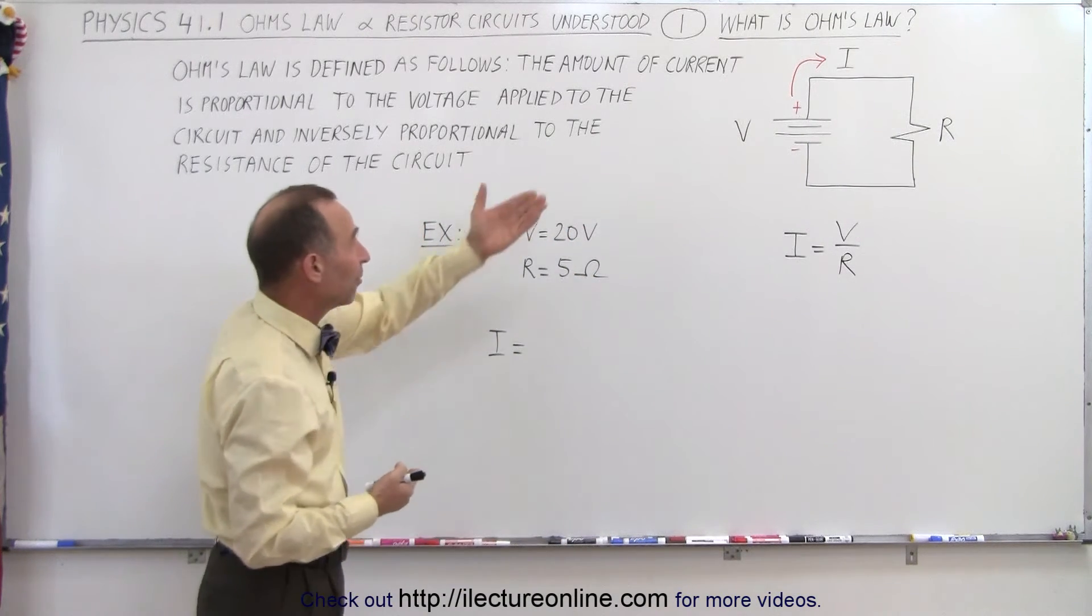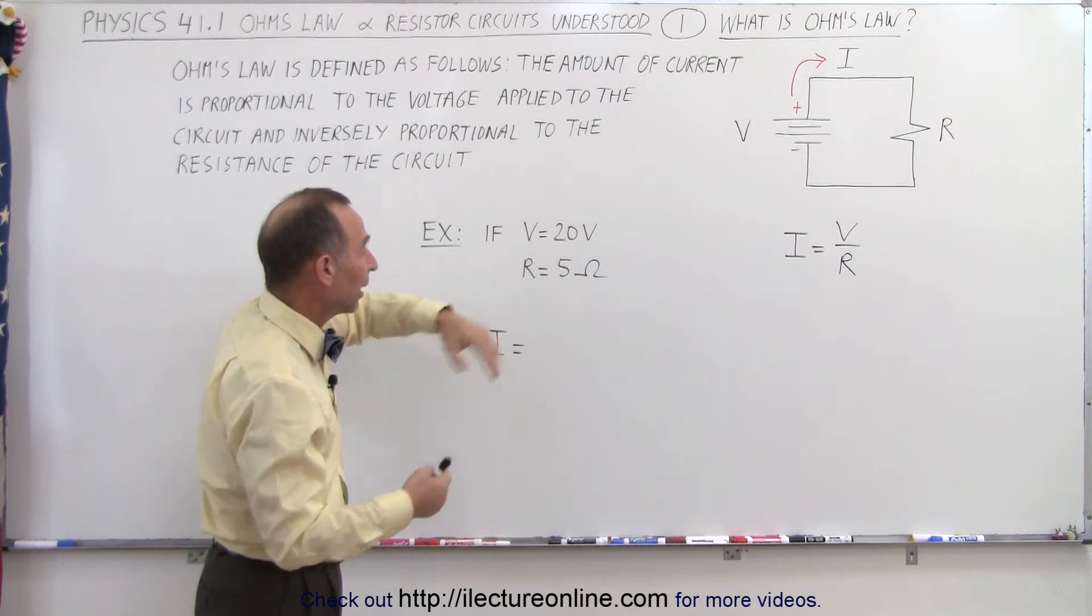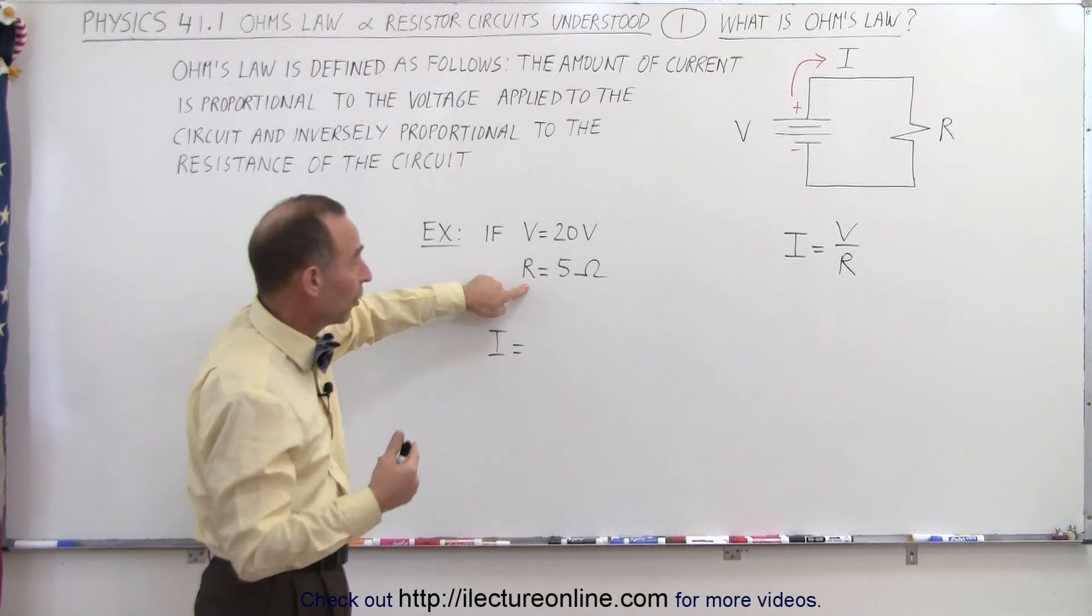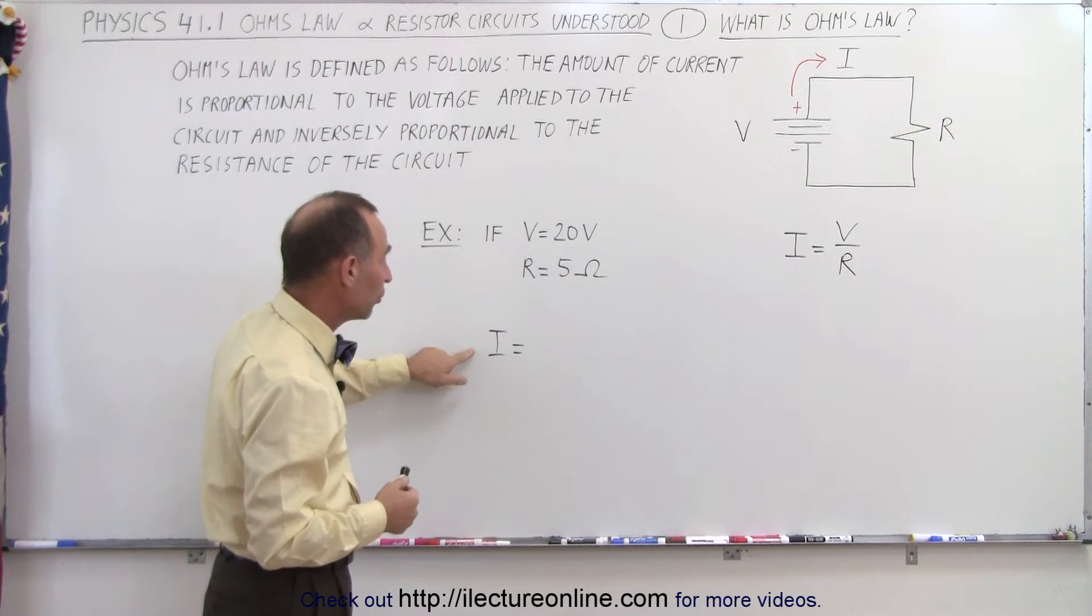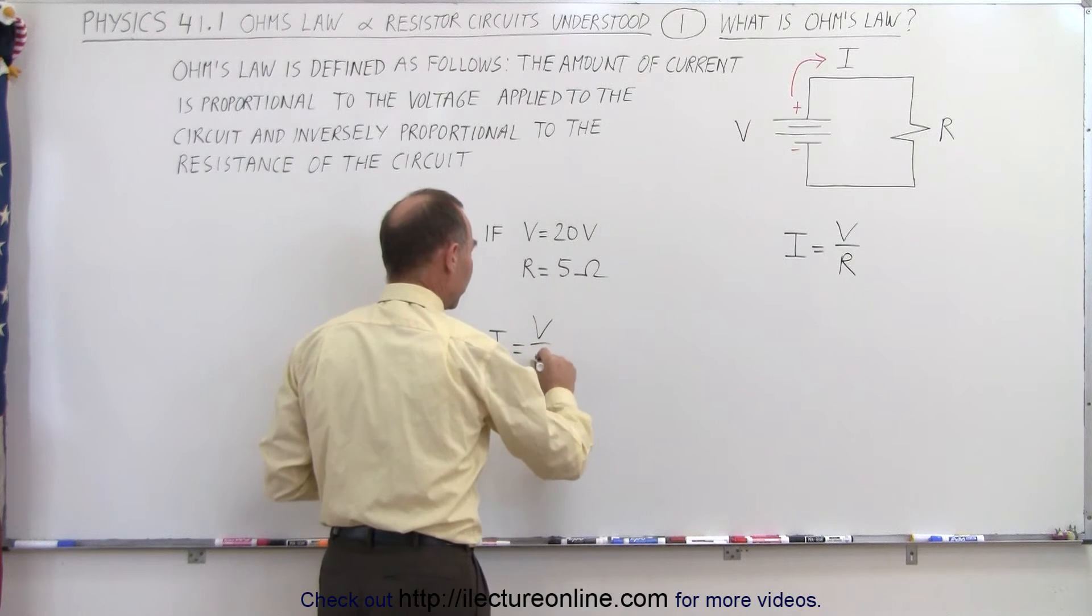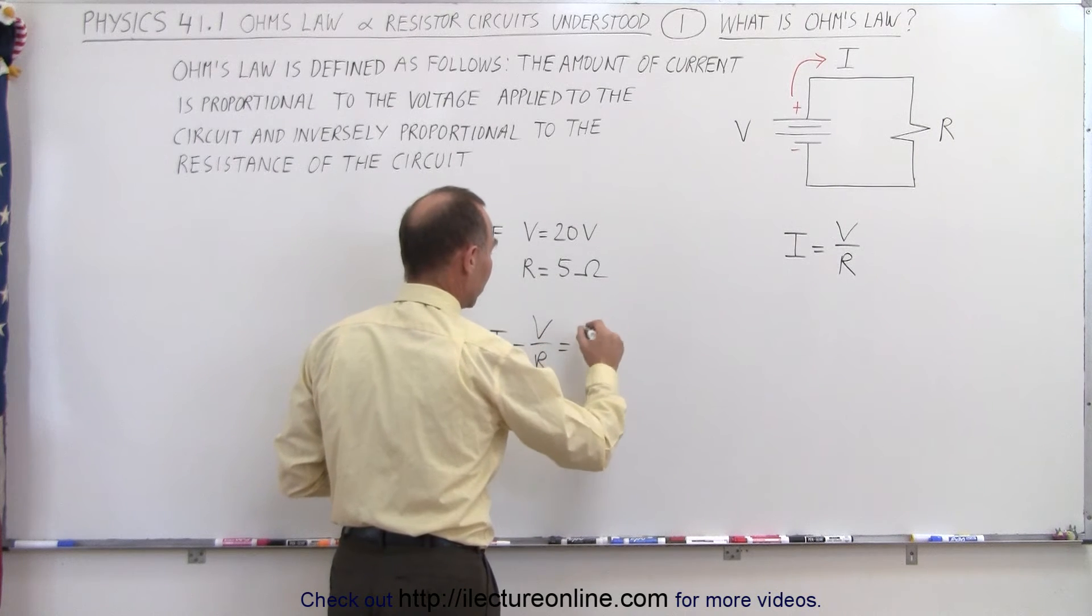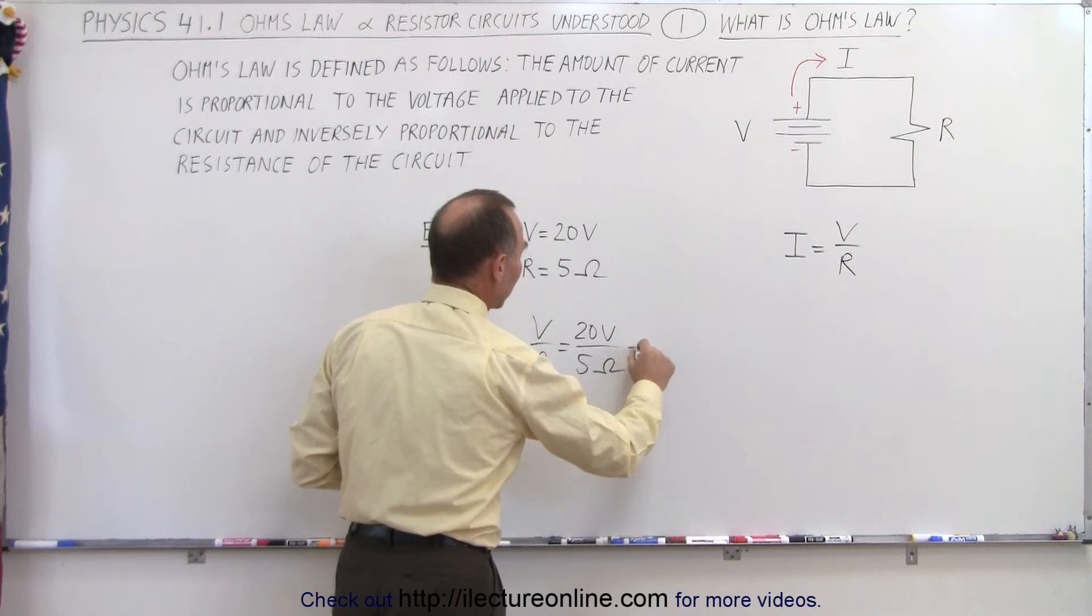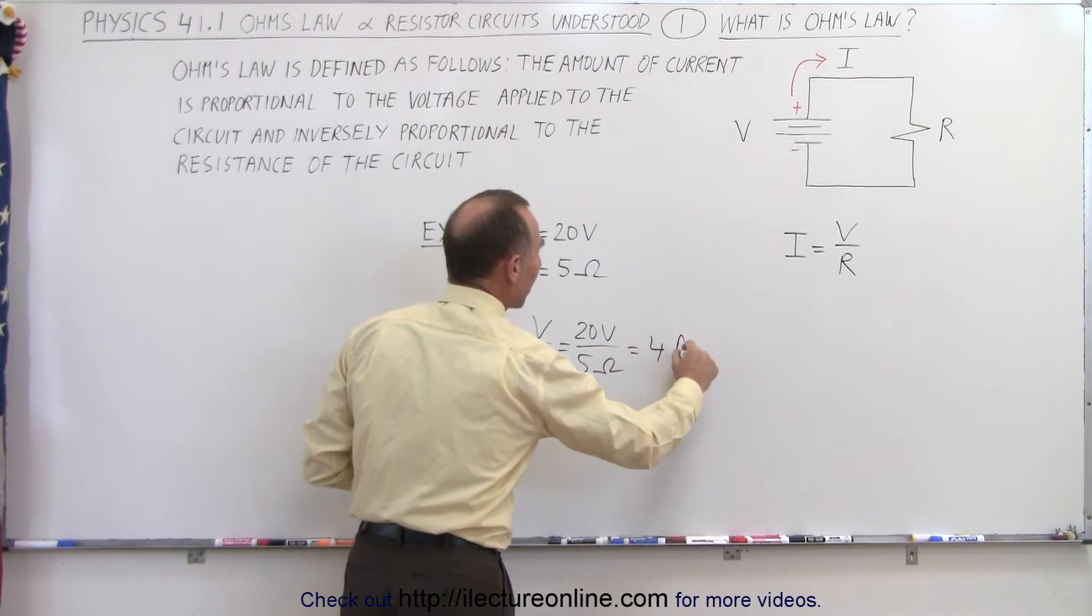As an example, let's say that we have a battery that contains or that applies 20 volts to the circuit and we have a resistance in the circuit of 5 ohms. The current can then be calculated as follows. It is V over R, the voltage divided by the resistance. So in this case, it's 20 volts divided by 5 ohms and that gives us 4 amps.